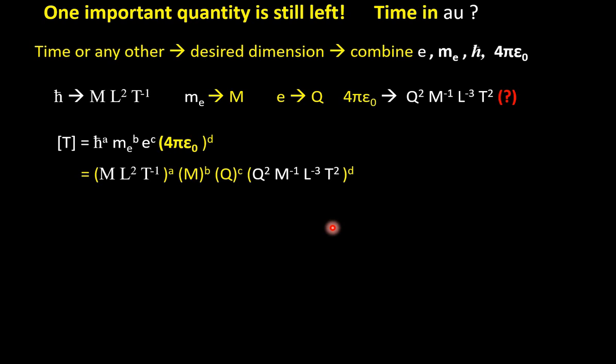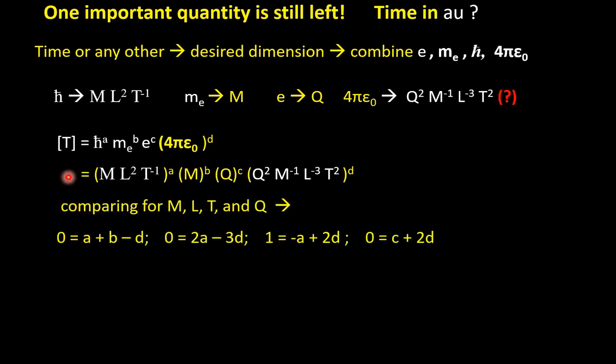Now, we will compare left hand side right hand side one by one term wise. Before that, let us put the unit h bar is this to the power A, m to the power B, charge to the power C and this whole 4π epsilon 0 to the power D. Now, we can compare for four quantities Q, M, L and T. Mind that on your left, there is no Q, M or L, only T is there. So if we compare, we will get some equations where left hand side is 0. For example, M. There is no M in the left hand side. So coefficient is 0, but here M to the power A and B. So A plus B and here M to the power minus D. So A plus B minus D from right and from left is 0.